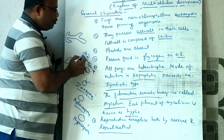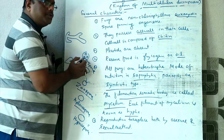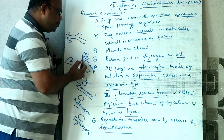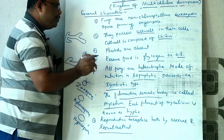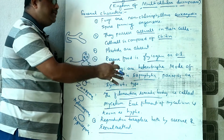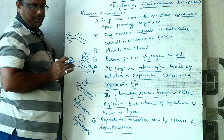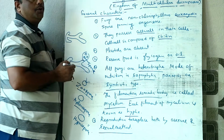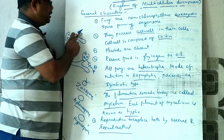In some fungi, the sporangium without forming spores directly detaches and germinates to form a new fungus. This detachable sporangium is called a conidium.